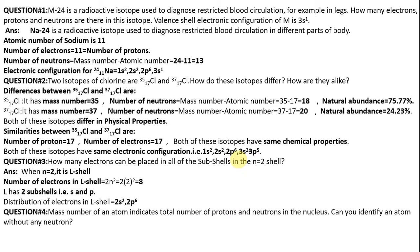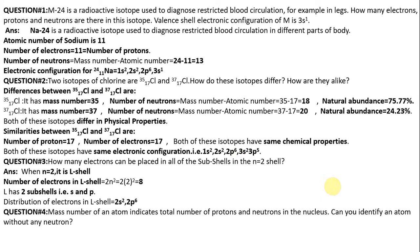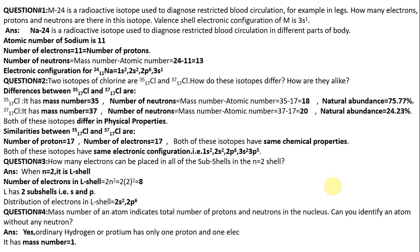The next question: mass number of an atom indicates the total number of protons and neutrons in the nucleus. Can you identify an atom without any neutron? We know mass number indicates total number of protons and neutrons. Ordinary hydrogen, or protium, has only one proton and one electron. It has no neutron in its nucleus. So its mass number is 1.